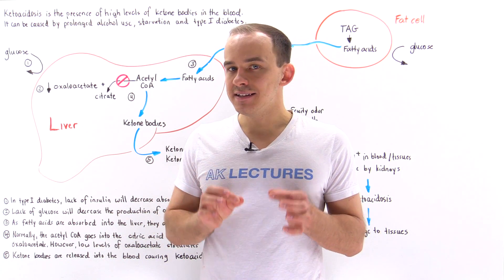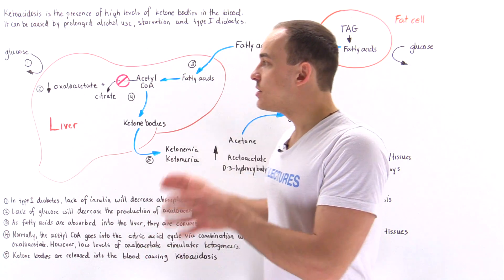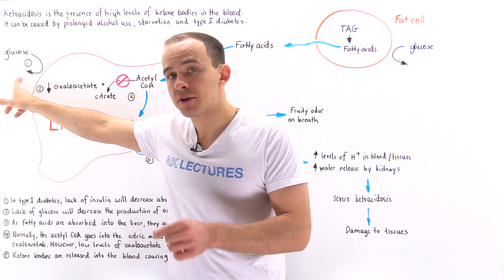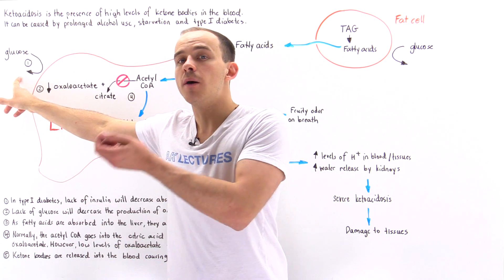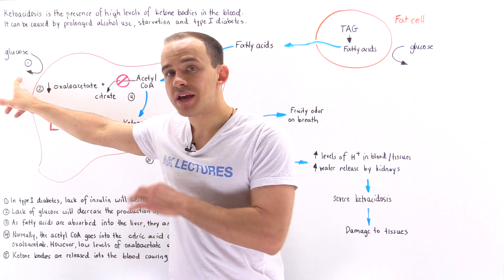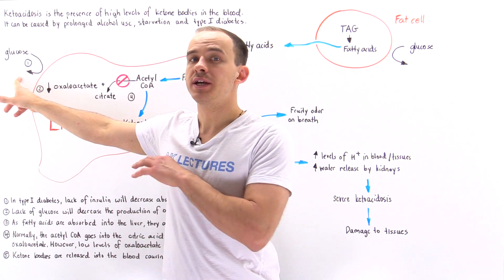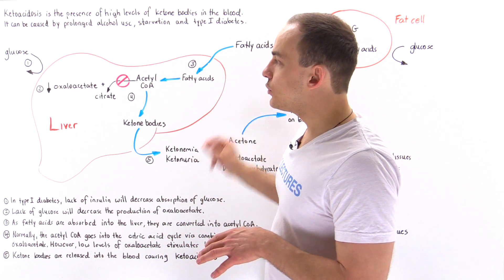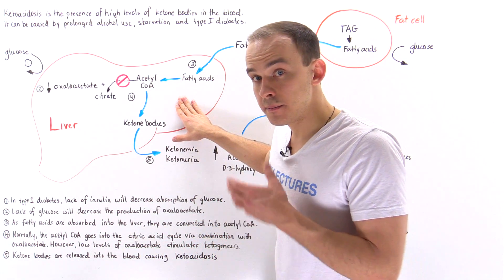If we don't have any insulin, then that means the liver cannot actually absorb that glucose because the insulin is used to upregulate the absorption of glucose into the liver. If we have no insulin, we cannot absorb the glucose. So if we can't absorb the glucose into the liver cells, the hepatocytes...